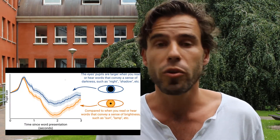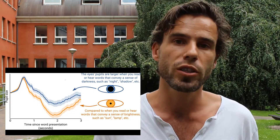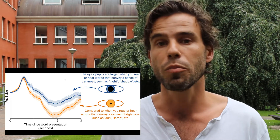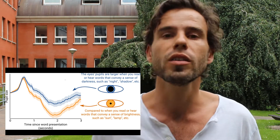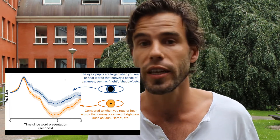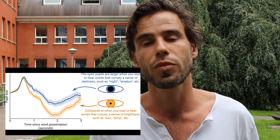What we found is that when participants read words associated with brightness, such as 'sun,' their pupil was a little bit smaller compared to when they read words associated with darkness. In other words, the pupil responds to the implied brightness of words in more or less the same way — but of course much more weakly — as it responds to the real brightness of things.